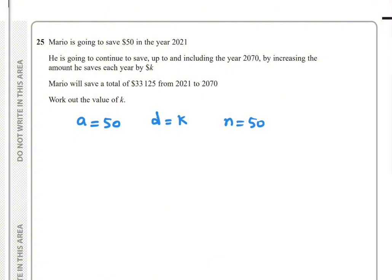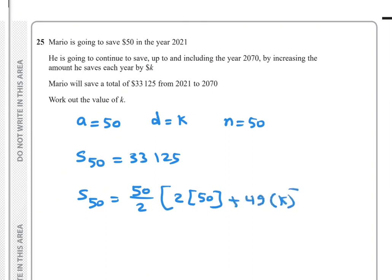So now we have S₅₀ equals 33,125. S₅₀ equals, from the rule, 50 over 2 times 2a, so 2 times 50, plus n minus 1, so 49, times d, which is k, equals 33,125.